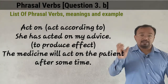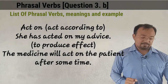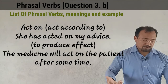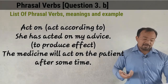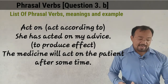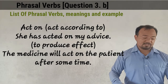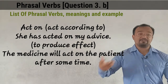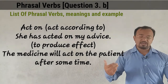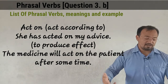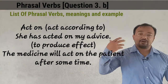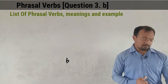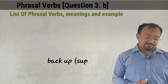Another example of 'act on': 'The medicines will act on the patient after some time.' That means act on here means to produce an effect. So act on has two meanings: first, to act according to; and second, to produce an effect.